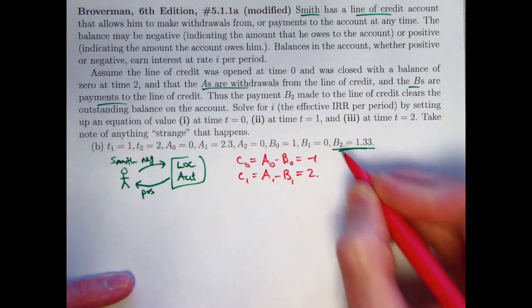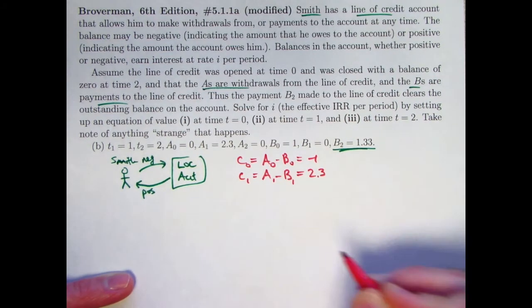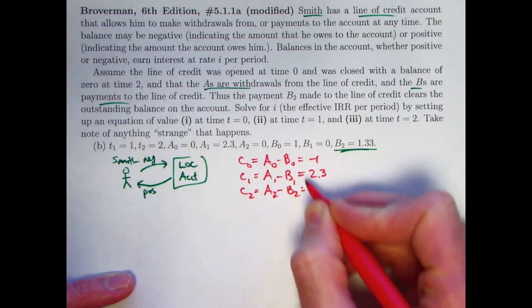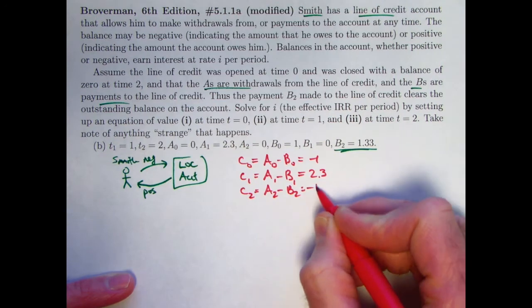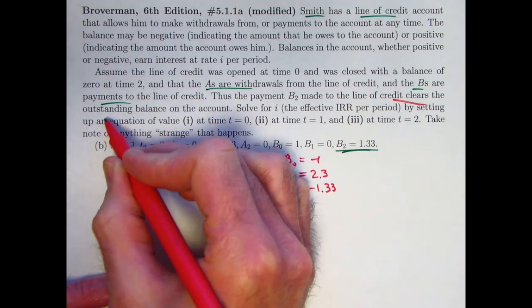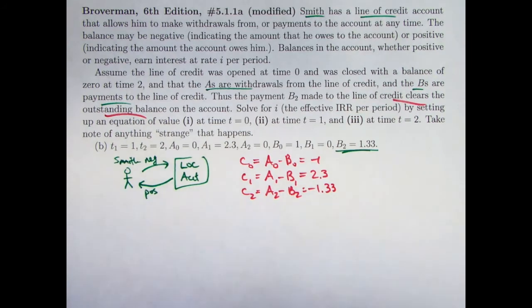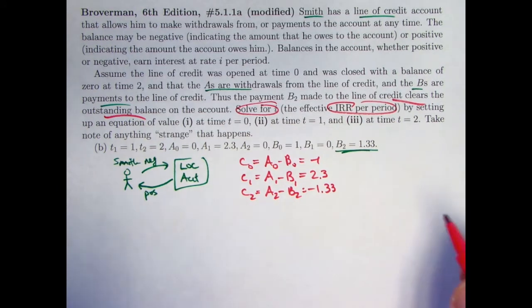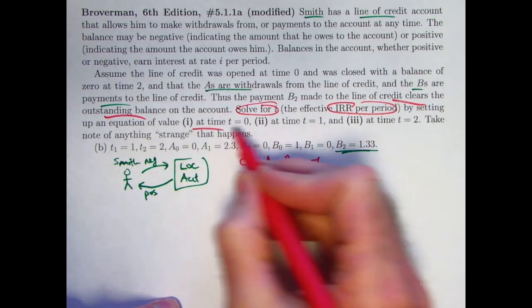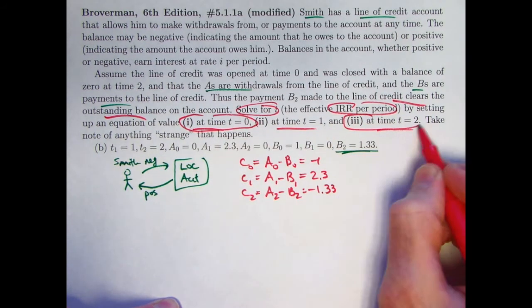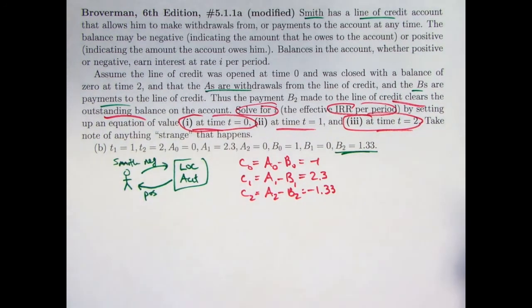And in each of these situations, the key thing to calculate is the difference A minus B. There's going to be a C0 is A0 minus B0. 0 minus 1 is negative 1, representing a deposit of 1 into the line of credit account. It's negative 1 because it's going away from Smith to the line of credit account. C1 is really Smith borrowing money now. It's a positive quantity. It's 2.3 minus 0, which is 2.3. And C2 as being back to a negative quantity. A2 minus B2 is 0 minus 1.33 is negative 1.33. This does clear the outstanding balance, bringing it to 0 at the end. The goal is to solve for I, the internal rate of return per period. The period itself is not specified in three different ways.